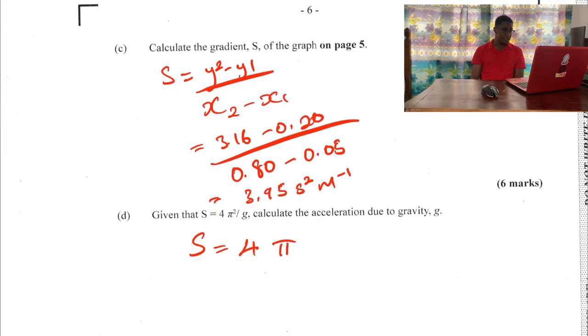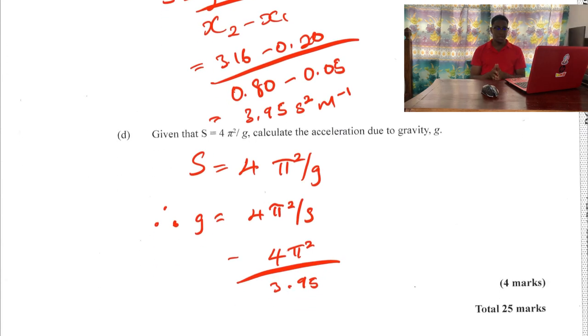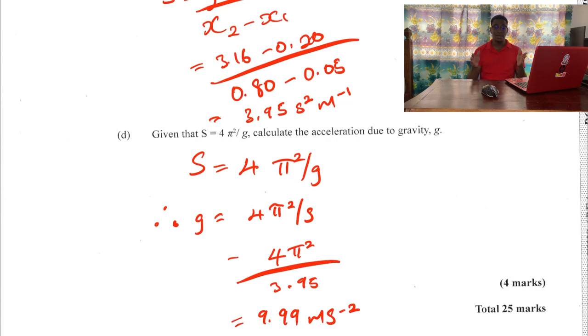Question D: given that S = 4π²/g, calculate the acceleration due to gravity. Starting with the equation S = 4π²/g, where S is the gradient from the T² vs. length graph, we can solve for g by rearranging — so g = 4π²/S. By measuring the period of a pendulum and plugging into this equation, we can calculate the acceleration due to gravity, which is a fundamental constant, and verify our experimental values were correct.